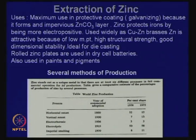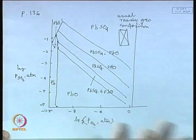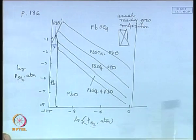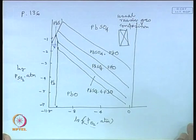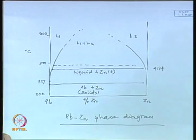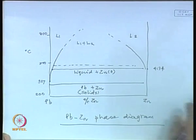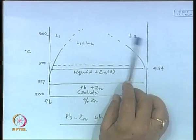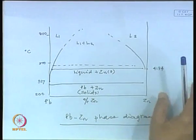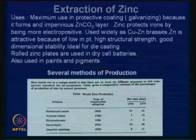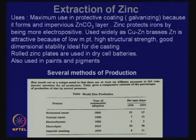Now, let us leave lead aside and go to extraction of zinc. Incidentally, we do produce lead in our country — as mentioned in Tundoo by the blast furnace, about 15,000 to 20,000 tons per year — as well as in Vizag. Some lead is also being produced by the imperial smelting process, which I will discuss in the next lecture. We will now talk about extraction of zinc. I need not tell you about the importance of zinc.